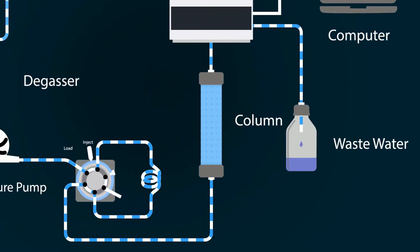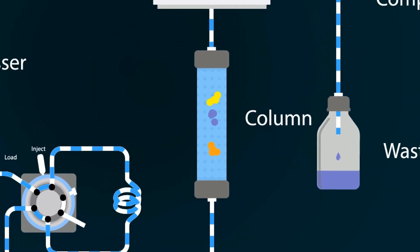In column, the components of sample separate. You can clearly see it separate into polar and non-polar molecules.